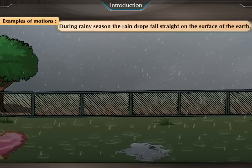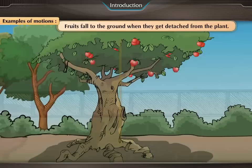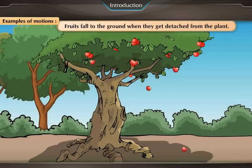During rainy season, the raindrops fall straight on the surface of the earth. Fruits fall to the ground when they get detached from the plant.